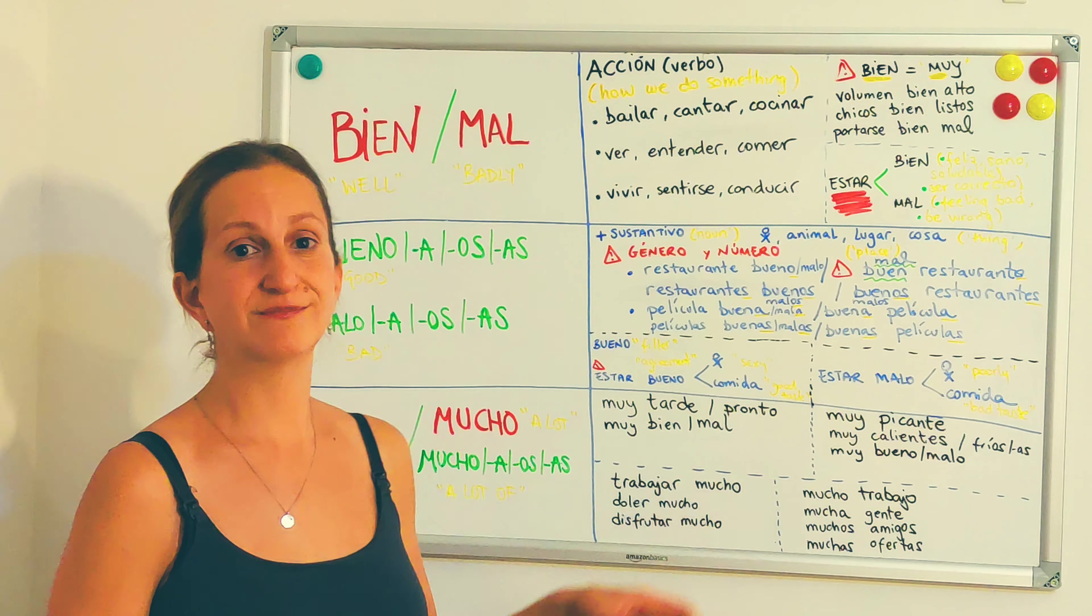Por el contrario, podemos usar mucho, mucha, muchos, muchas as an adjective, and it goes again with a noun, and it means a lot of. So, for instance, I've got a lot of work to do. Tengo mucho trabajo que hacer.